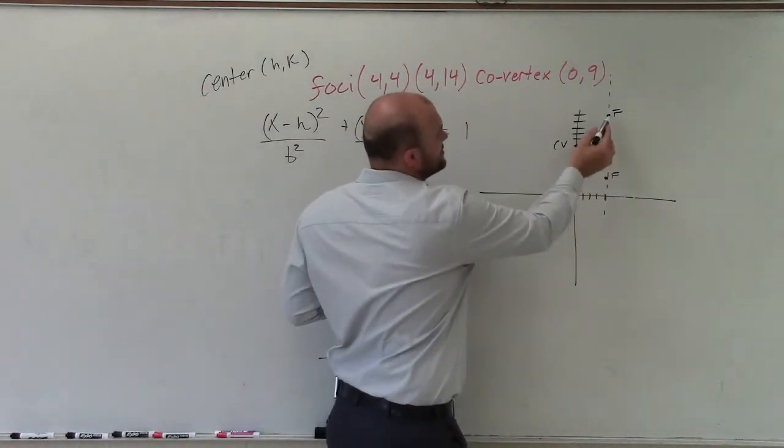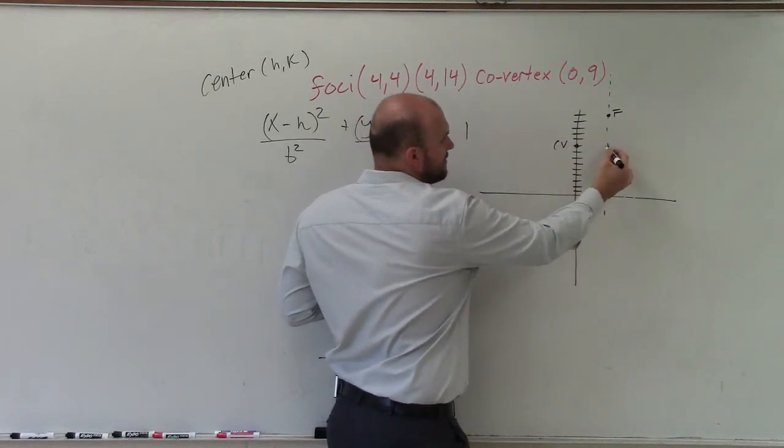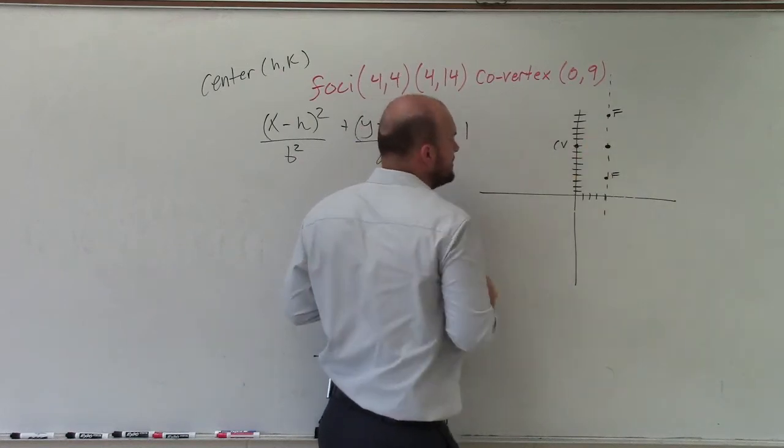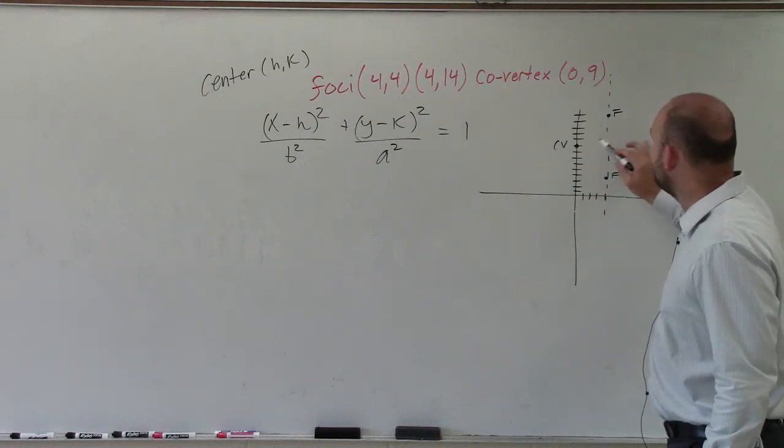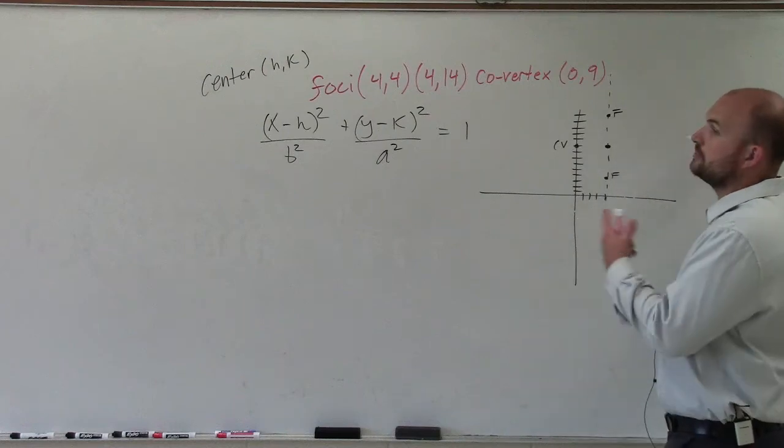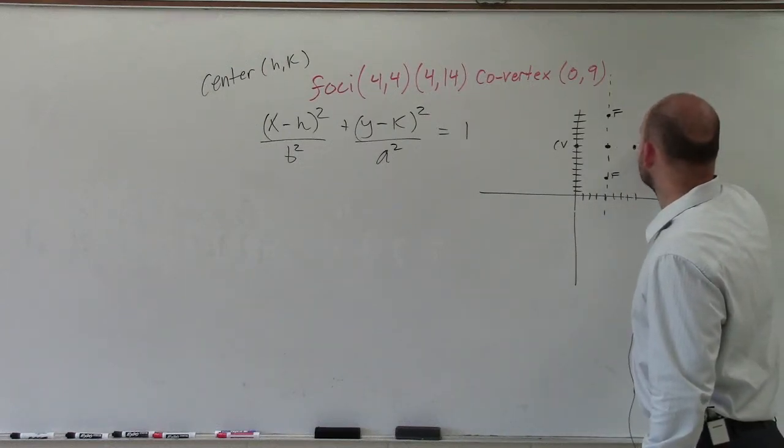So if I wanted to find just the half distance of my two foci, I can reason that my center, I'd probably say the half distance is going to be somewhere right on here. Now, since the co-vertex is 1, 2, 3, 4, four units away from the center, or at least the major axis, it has to be four units to the other side, 1, 2, 3, 4, on the other side.